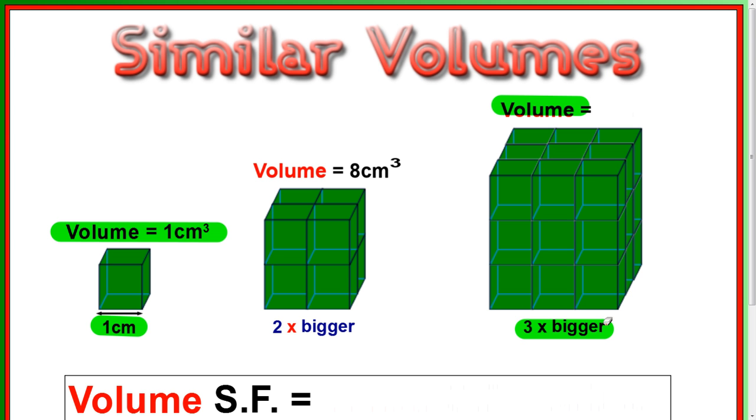Well, the volume of this is three times three times three. So, three times three times three, that's 27 centimetres cubed. You can see 27 cubes here. So, how did we get from one to 27?